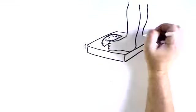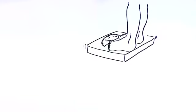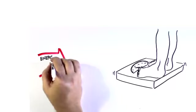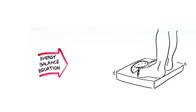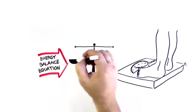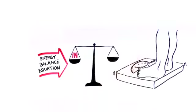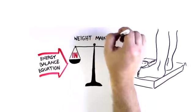It's generally accepted that body weight is determined by a pretty simple formula. We call it the Energy Balance Equation. And it works like this. If the number of calories that you consume equals the number of calories that you burn, your weight remains the same.